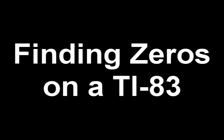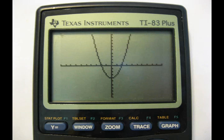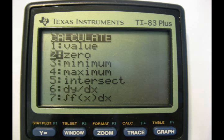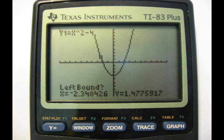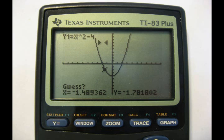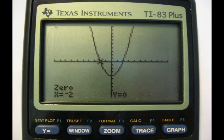And to do the zeros, you graph your graph, and then you go second and then press trace, and that will be second calc. And then you press 2 to get zero. Then you'll go to the left bound, so wherever your zero is going to be, you go to the left side of it, and you press enter. Then you do the right bound, press where the right side of it would be, press enter. And then it will say guess, and press enter, and that will give you your zero.